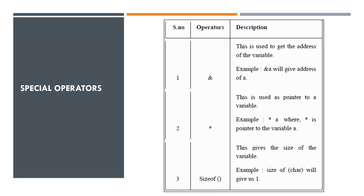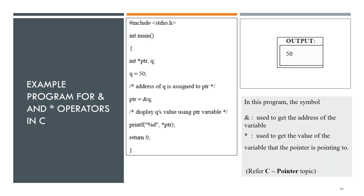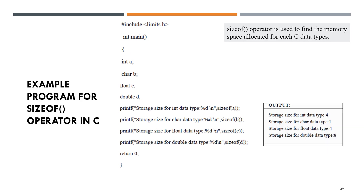Next, special operators. The & operator is used to get the address of a variable, and the asterisk (*) operator is a pointer to the variable. The sizeof operator gives the size of the variable. This is a program using the & and * operators — this is under the pointer topic, which will be covered later. Next, an example of using the sizeof operator to find the size of a variable.